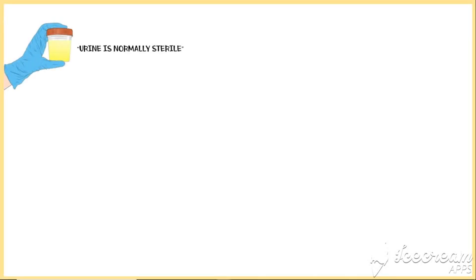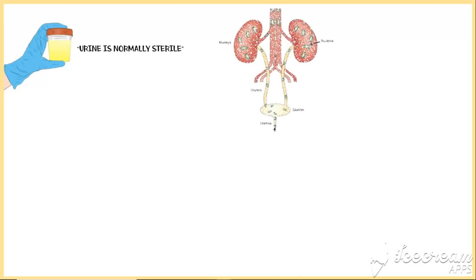Urine is normally sterile. However, sometimes certain pathogens gain access to the urinary tract, causing urinary tract infections.